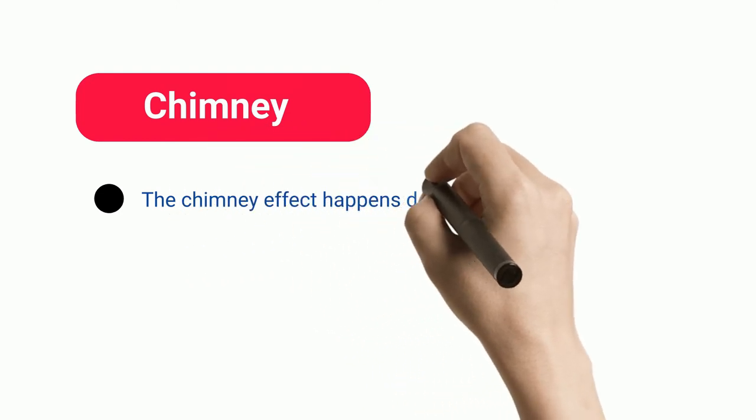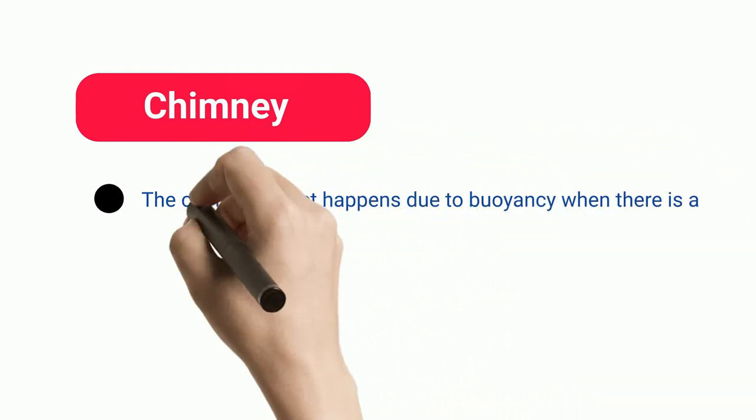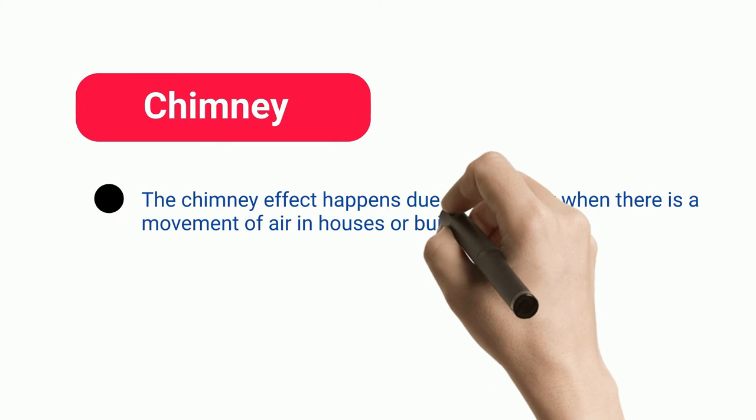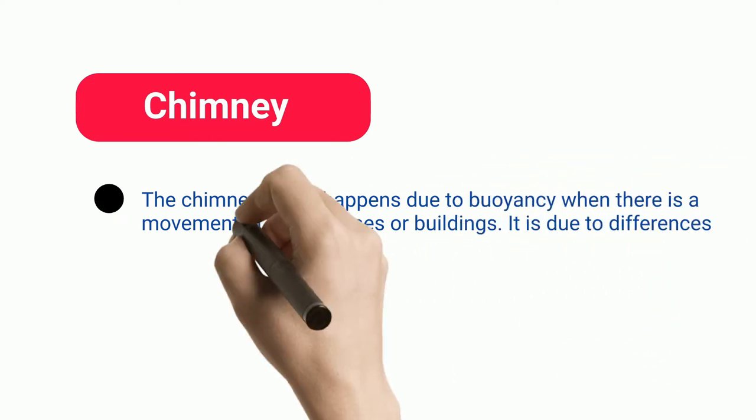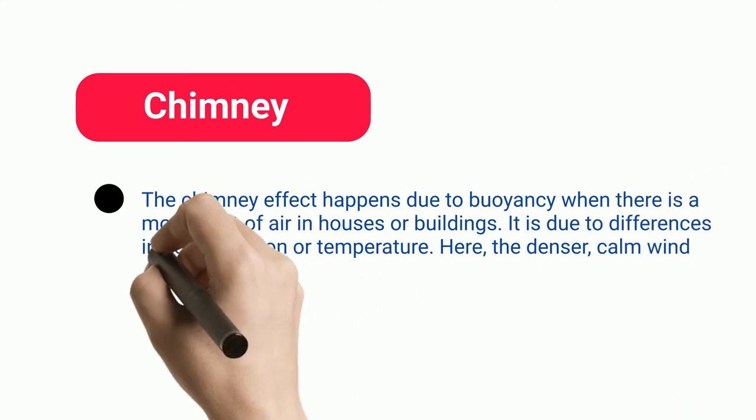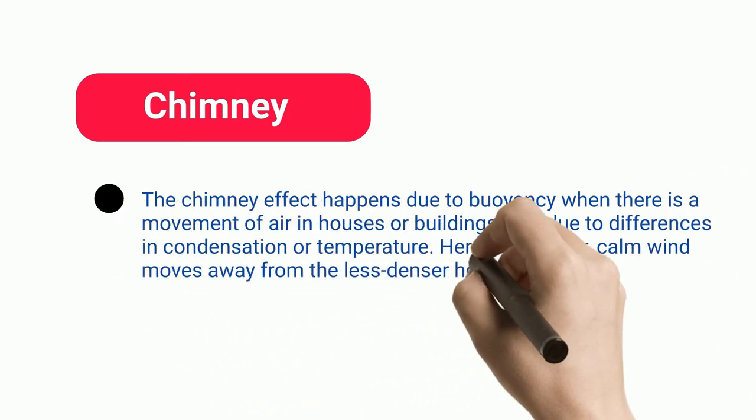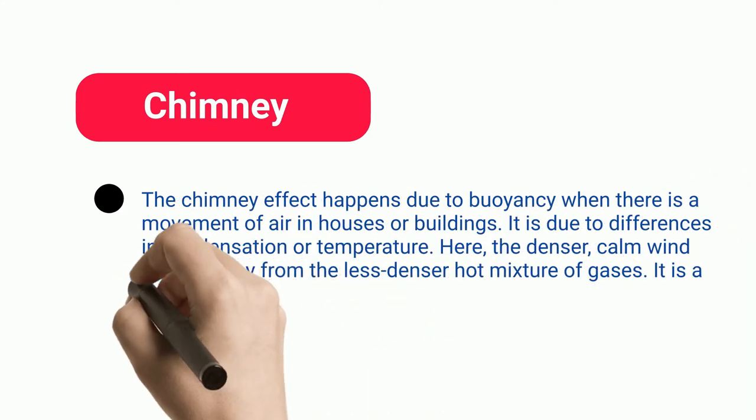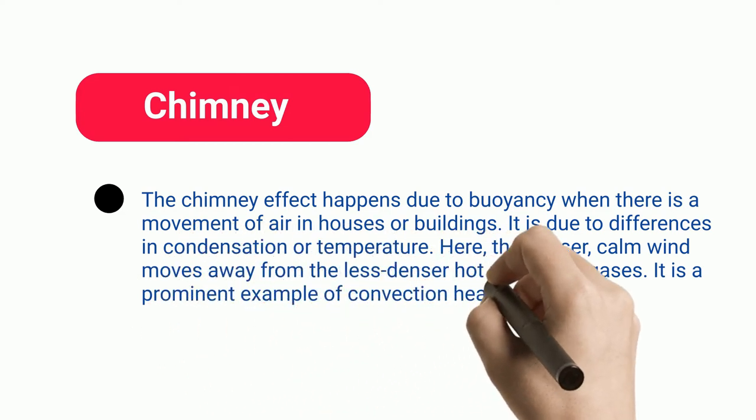Chimney: The chimney effect happens due to buoyancy when there is a movement of air in houses or buildings. It is due to differences in condensation or temperature. Here, the denser, calm wind moves away from the less denser hot mixture of gases. It is a prominent example of convection heat transfer.